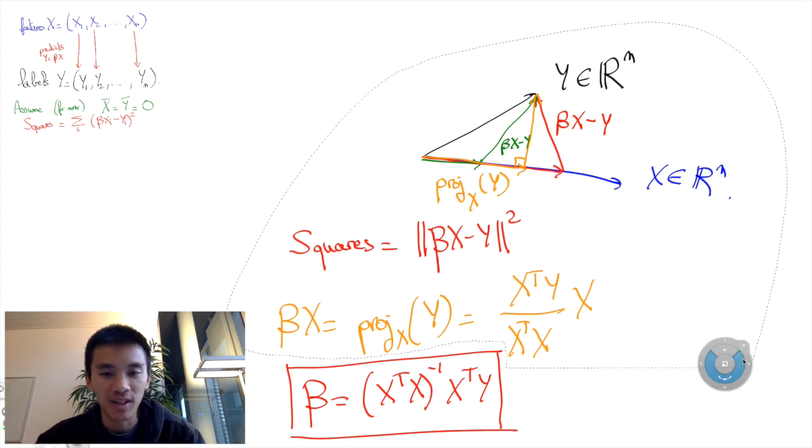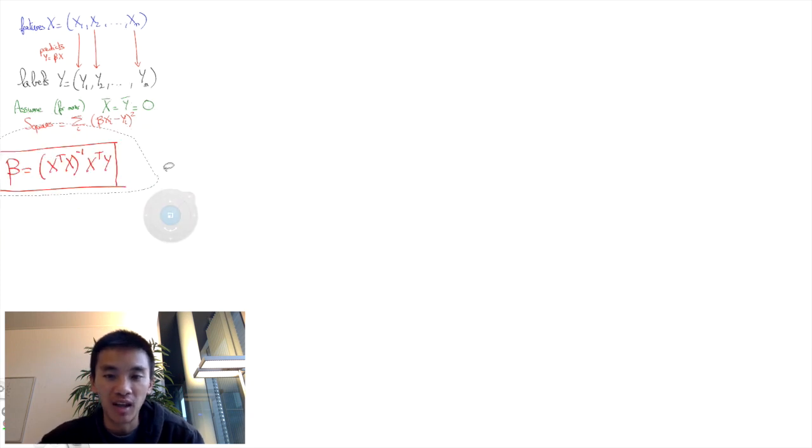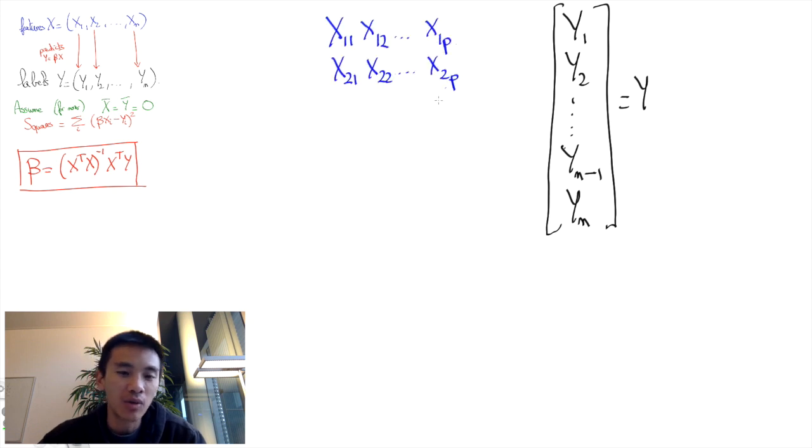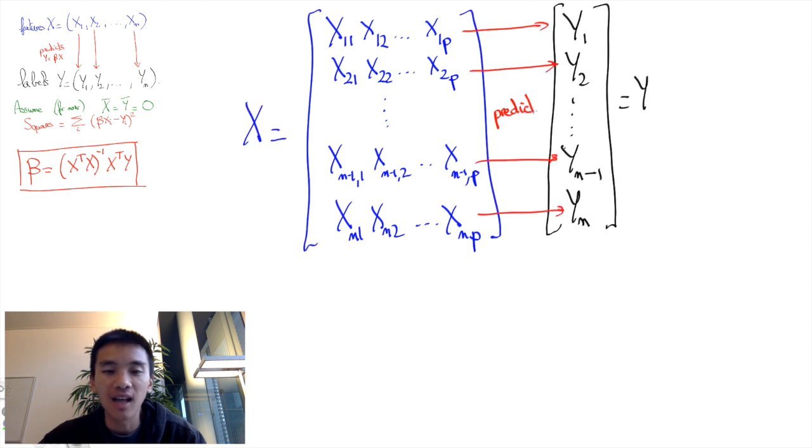Now let's move on to the multidimensional case. Now we want to explain each real-valued label yi by a p-dimensional vector xi = (xi1, xi2, ..., xip).